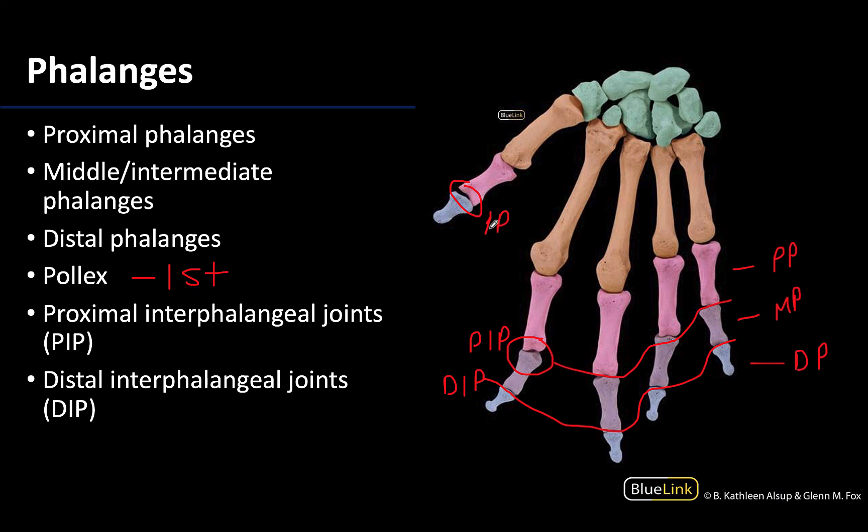Those are the bones of the upper limb. Let's get into some of the specific joints in this region and then we'll move on to muscles. Thanks for your time and attention, and always feel free to reach out with any questions.